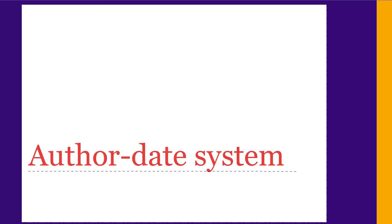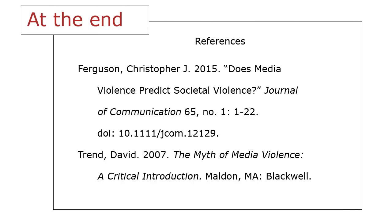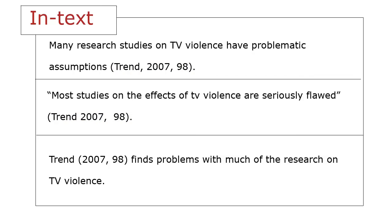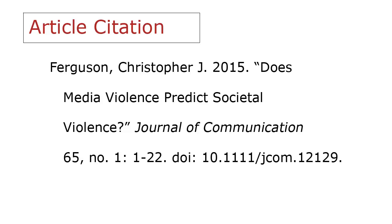Next, let's look at the author date system. At the end of your paper, you give a list called references, which has all the sources you refer to in your paper. The references list should be in alphabetical order by author last name. In this system, you need to put the author's name, publication year, and page number in brackets at the end of each sentence where you refer to a source, either in quotes or in your own words. If you mention the author's name in your sentence, include the year in brackets right after the name, then put the page number in brackets at the end of the sentence. The citations in the reference list need to be formatted in a specific way, which is mostly the same as the bibliography in the notes and bibliography system.